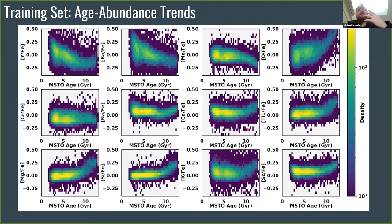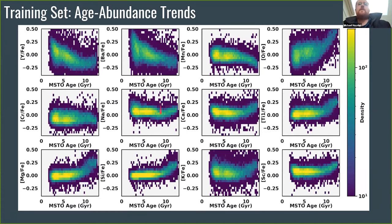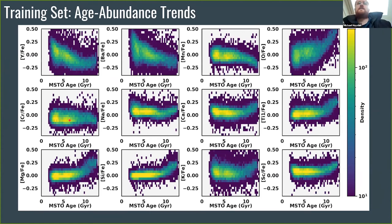The training set shows the same abundance-age relations I showed earlier from Sanjeev — yttrium, barium, alpha elements silicon and magnesium, and some iron-peak elements like chromium. There's not a strong age trend for chromium, but it helps if your initial iron estimate wasn't too accurate — it will help beat down those uncertainties and make your clock a little bit more accurate.